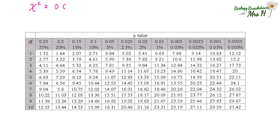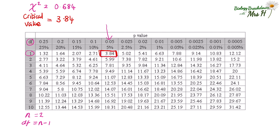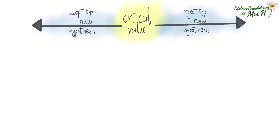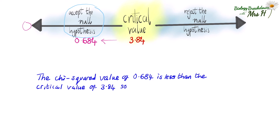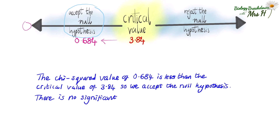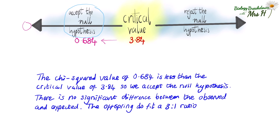The chi-squared value of 0.684 needs to be compared with a critical value. This time we have two phenotypes so the number of categories N is 2, which means degrees of freedom N minus 1 is 1. At p equals 0.05 the critical value is 3.84. Using the double-headed arrow diagram with the critical value at 3.84: the chi-squared value is less than the critical value so we sit it to the left — we accept the null hypothesis. Conclusion: the chi-squared value of 0.684 is less than the critical value of 3.84, so we accept the null hypothesis. There is no significant difference between the observed and expected — the offspring do fit a 3 to 1 ratio.